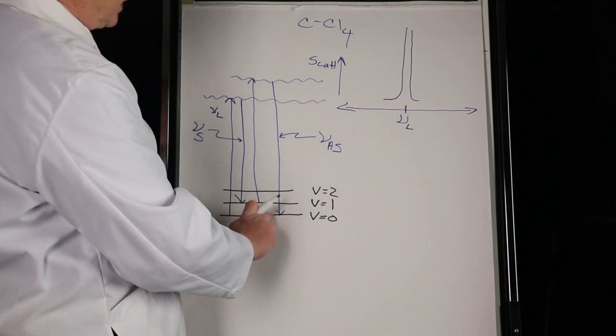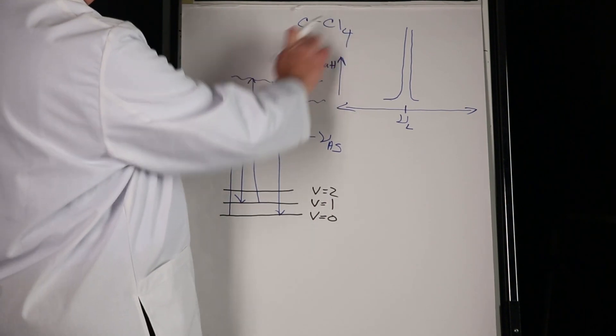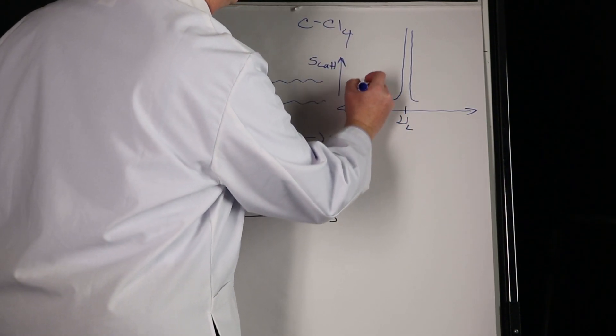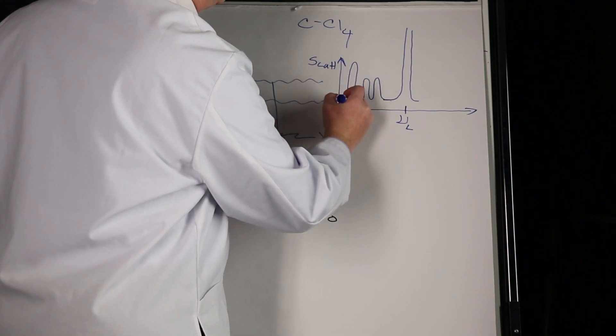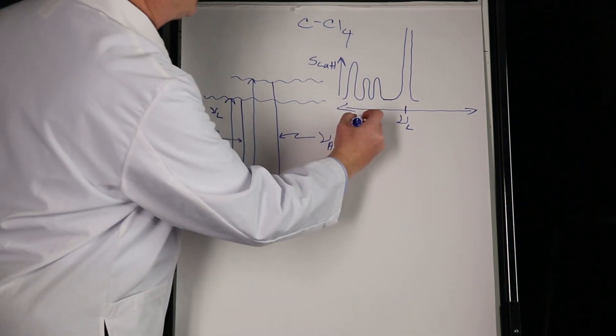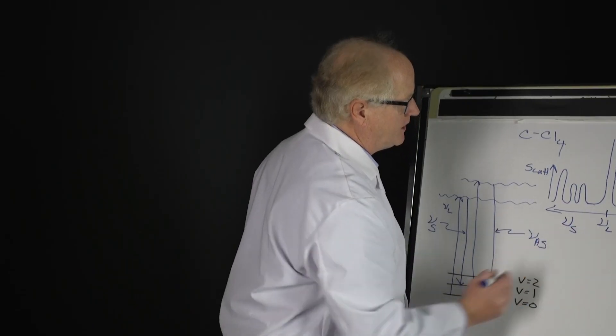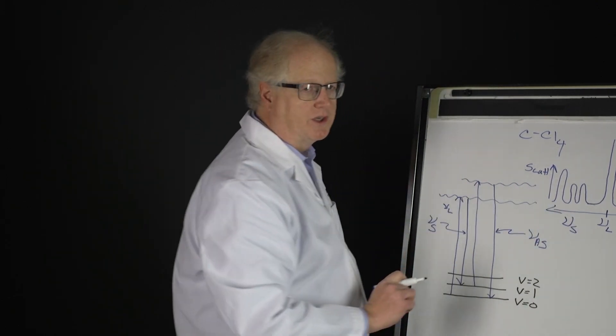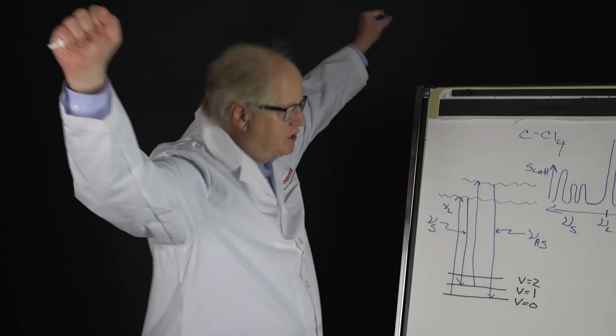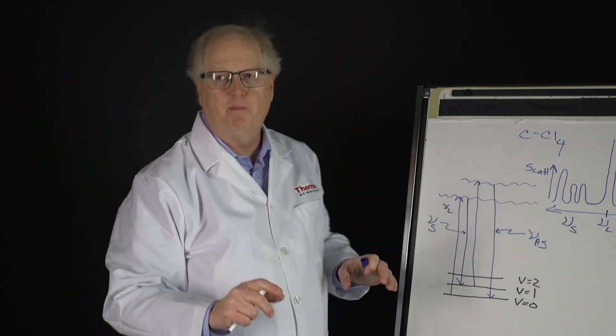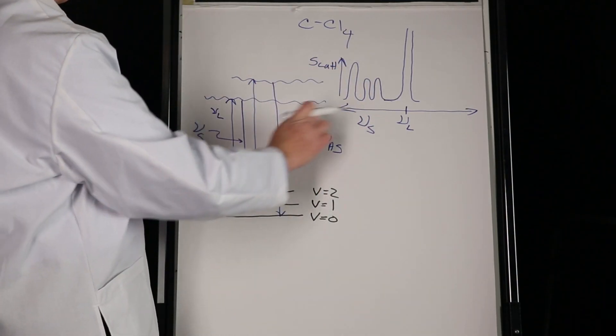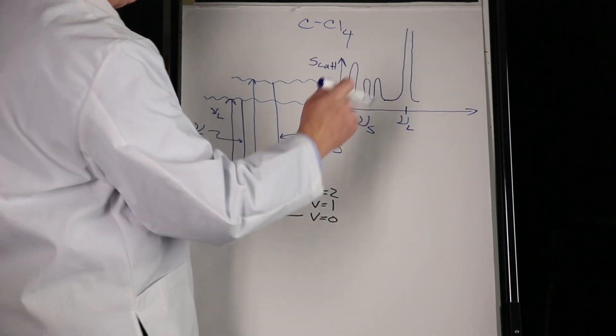Now, if we consider the carbon tetrachloride molecule, it has a couple of different motions. We'll just look at three. There are three motions, and this is on the Stokes side, so this is on the lower energy side. So we get three peaks due to different motions of the carbon tetrachloride. This big one is due to the symmetric motion of the carbon tetrachloride molecule - the symmetric stretch of all the carbon chlorines. These are various other modes.